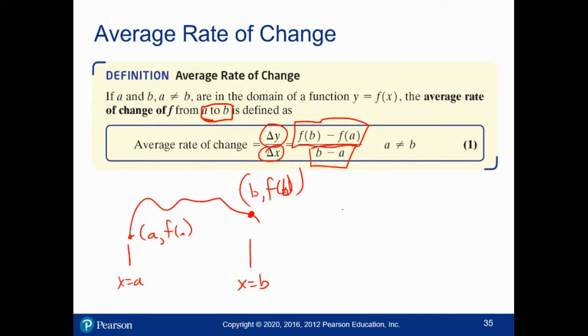Notice that this is a delta y over delta x. This is a slope. It's the slope of the line connecting these two points. So the slope of that line is the average rate of change and there will be some nicer pictures in just a minute.